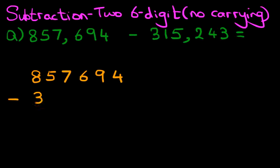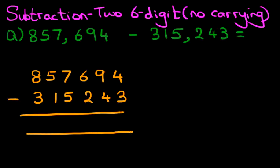Let's label the columns as well. We've got units, tens, hundreds, thousands, ten thousands, and hundred thousands.